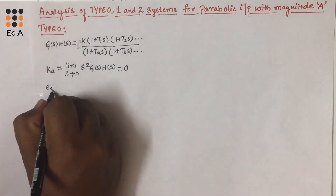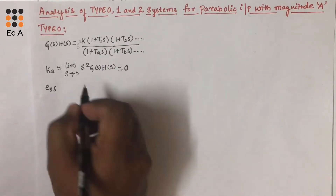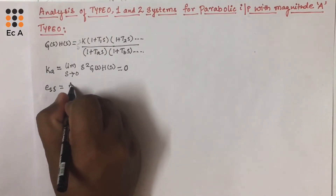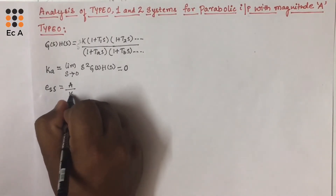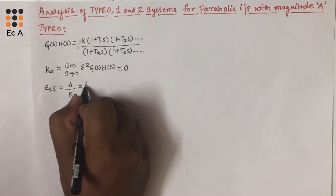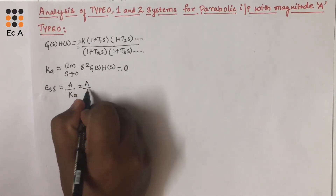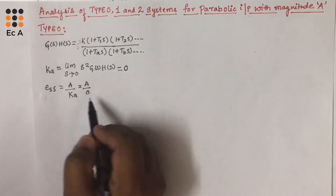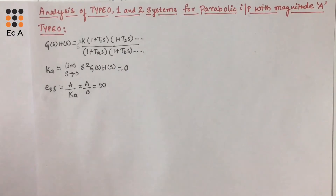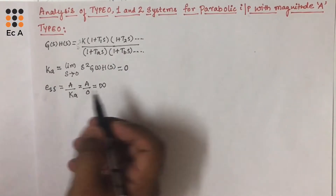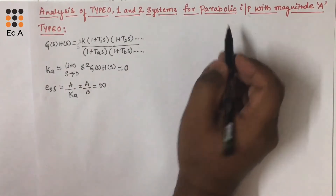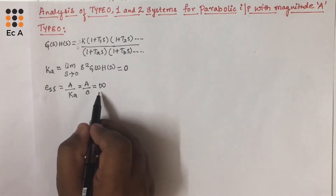We know the steady-state error for a parabolic input is equal to A divided by Ka. Since Ka is equal to 0, we can write it as A divided by 0, which is infinity. So the steady-state error for type 0 system for a parabolic input is infinity.